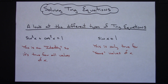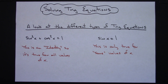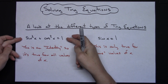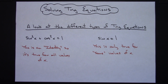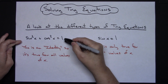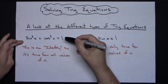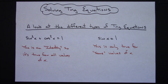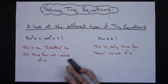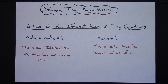In this video we're going to take a look at solving some trig equations. Before we get into examples, I'd like to talk about the different types of trig equations. When you're first introduced to trig, you're taught several identities — things like sine squared x plus cosine squared x equals 1. That's called an identity because it's true for all values of x, so we don't necessarily have to solve those.